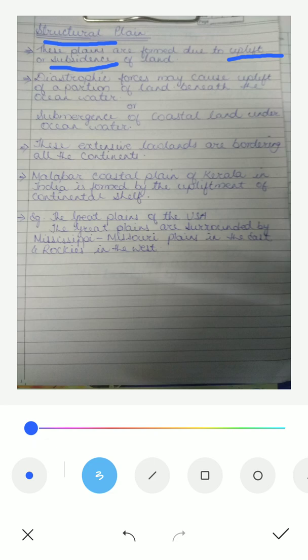These extensive lowlands are bordering all the continents. For example, the Malabar coastal plain of Kerala in India is formed by the upliftment of the continental shelf.